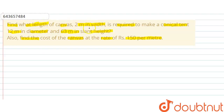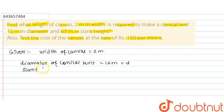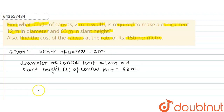We need to find the length of canvas, and the width of canvas is 2 meters. Given values: width of canvas = 2 meter, diameter of conical tent (d) = 12 meter, slant height (l) of conical tent = 63 meter, and the cost of one meter of canvas is rupees 150.